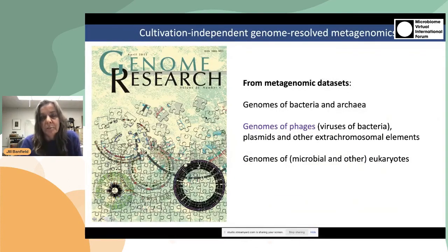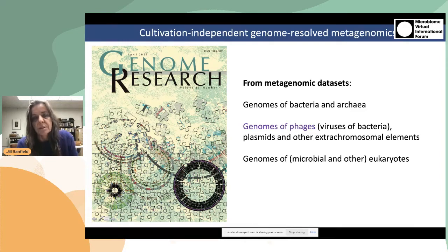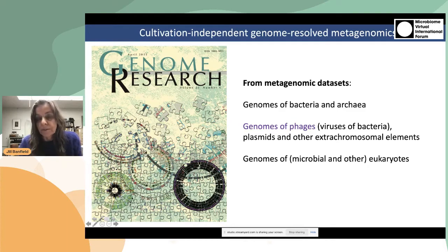Our approach is explicitly cultivation independent and we used genome-resolved metagenomics. This means that we study DNA that's extracted from entire communities, sequenced and assembled. From this approach, it is possible to reconstruct the genomes of bacteria and archaea. The genomes may be near complete or even curated to completion in some cases. They may be partial or some of the sequences may be unassembled, as is illustrated in this puzzle analogy on the left.